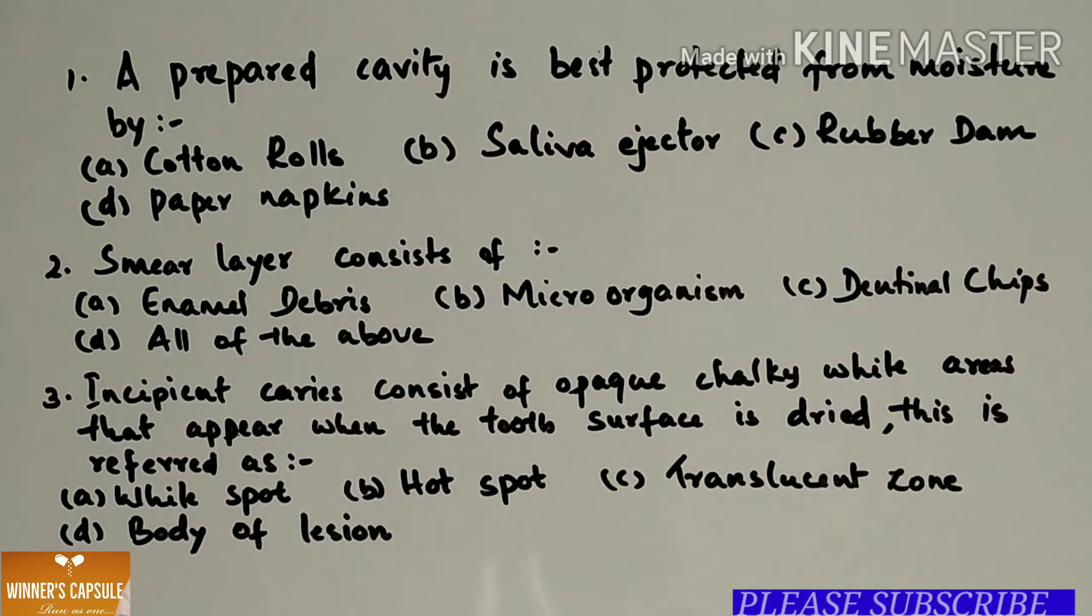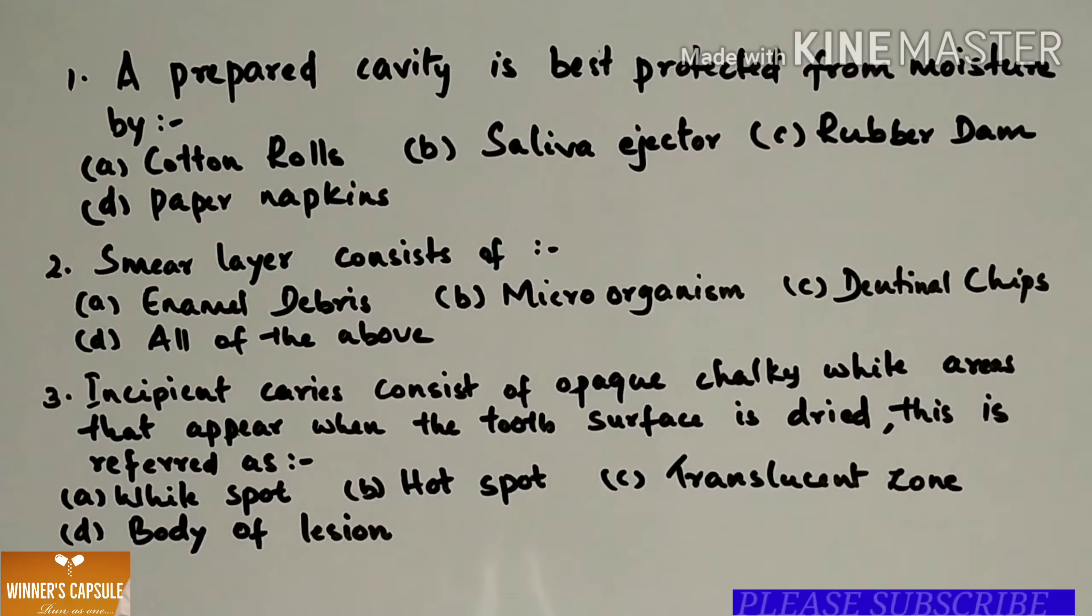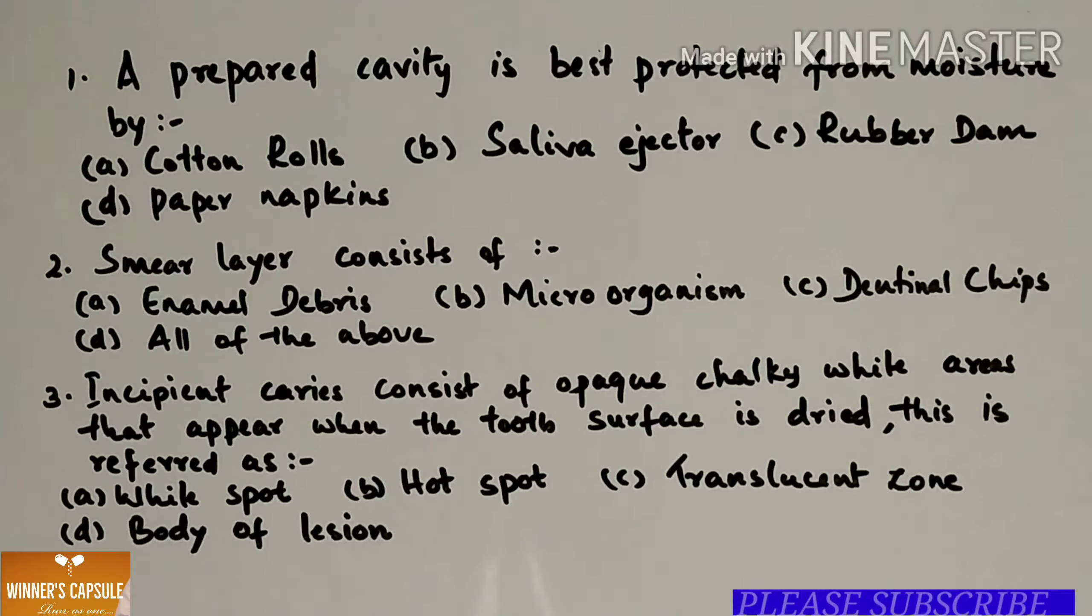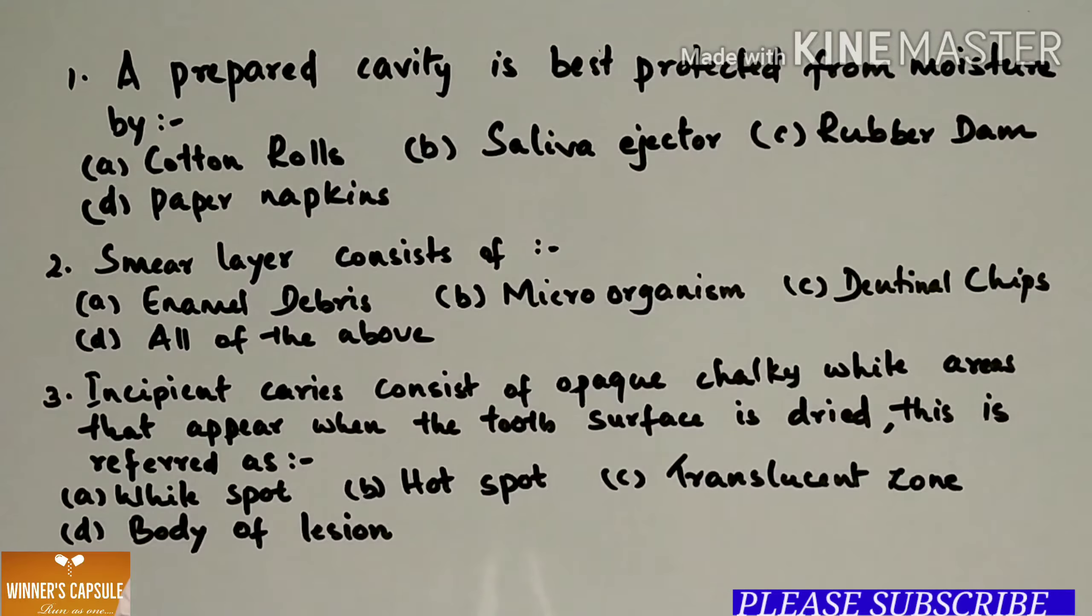Hello everyone, welcome back. Today we will discuss some NEET MDS questions. First one: A prepared cavity is best protected from moisture by (a) Cotton rolls (b) Saliva ejector (c) Rubber dam (d) Paper napkins. Answer is option C, rubber dam.